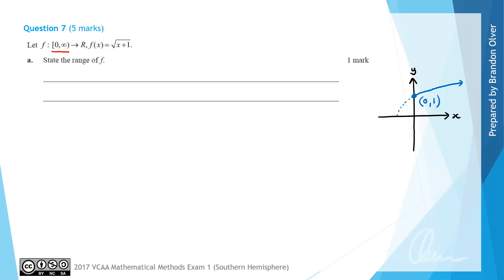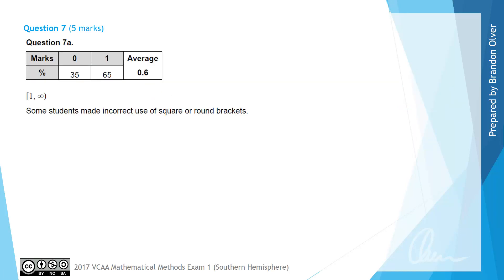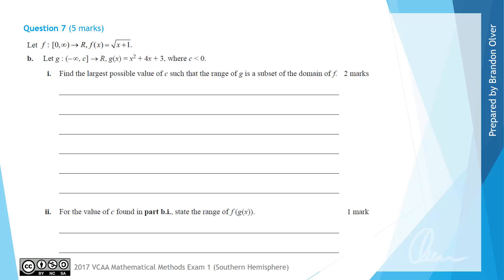By inspecting that graph we can see the range — the y values that come out of the function — is 1 to positive infinity. So that is the answer to part a. From the examiner's report, 65% of students got this question correct, and those who got it incorrect often had incorrect use of square or round brackets in their answer.